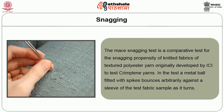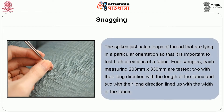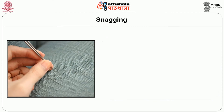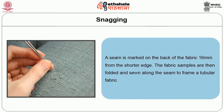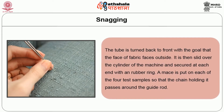The Mace snagging test is a comparative test for the snagging tendency of knitted fabrics of textured polyester yarns, originally developed by ICI to test the crimpling of yarns. In the test, a metal ball fitted with spikes bounces arbitrarily against a sleeve of the test fabric sample as it turns. The spikes catch loops of thread in a particular orientation, so it is important to test both directions of a woven fabric. The sample dimension is 203 mm x 330 mm — two with the long direction along the length and two along the width of the fabric. A seam is marked on the back of the fabric 16 mm from the shorter edge, and the fabric samples are folded and sewn along the seam to form a tubular fabric. The tube is turned inside out so that the face of the fabric faces outside, as in the pilling test.